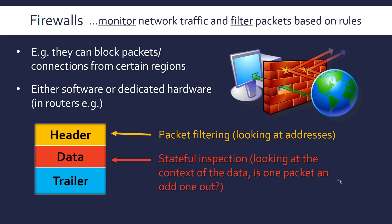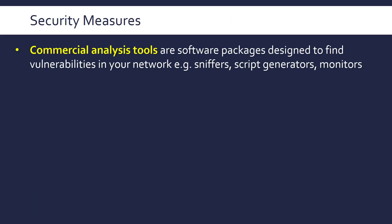We also need to talk about some more security measures. You can get commercial analysis tools — software packages, some free — designed to find vulnerabilities in your network. Types include sniffers, which can eavesdrop and see packets going through your network; script generators that generate malicious code to test your servers and hardware to see where they're vulnerable; and tools that allow you to monitor packets. You'd much rather do this yourself in a testing environment than allow someone to do it for real.